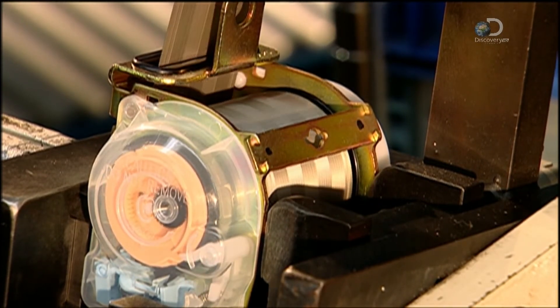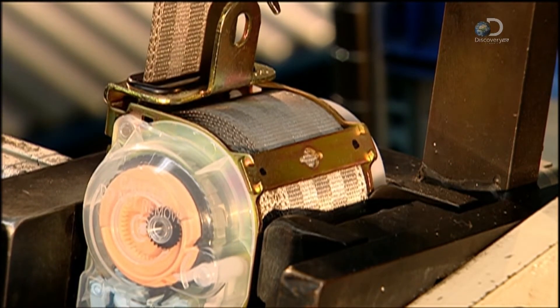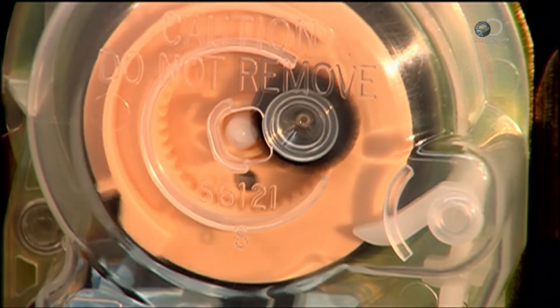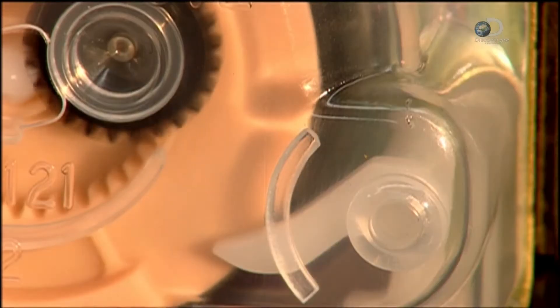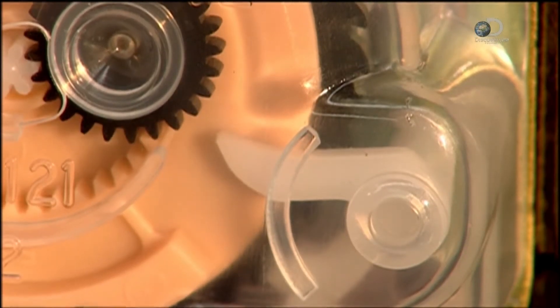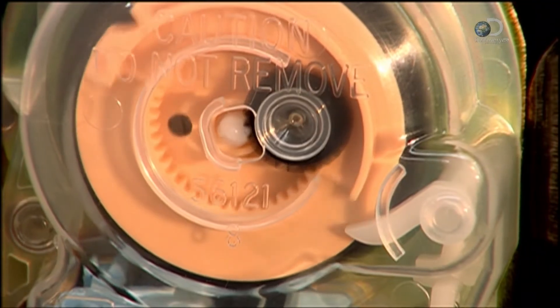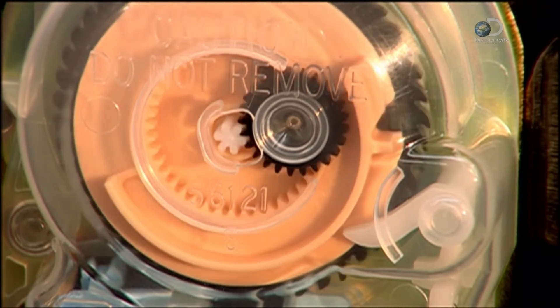At this factory, every single seatbelt component has to pass through a thorough quality control check. Here a machine checks a key safety feature, a lever and ratchet mechanism that prevents the webbing from extending after a child's seat has been fitted.